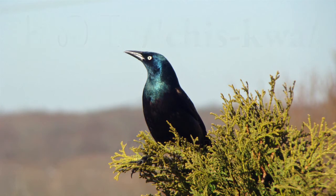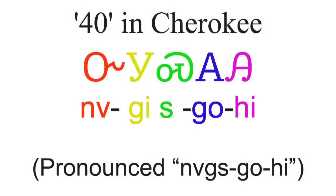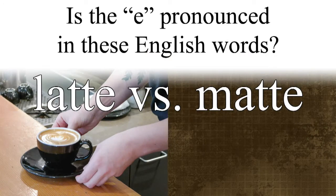The pronunciation rules change when Cherokee is spoken more rapidly. The word for 40 is spelled with syllabic characters, yet often pronounced with a consonant cluster. Pronounced directly from the syllables, this word would sound like nuggies-go-hi. In colloquial speech, the second vowel is dropped to sound more like nuggs-go-hi. However, readers would still know how to pronounce the word from the character sequence. It is similar to English speakers knowing when to pronounce or drop the final e, as in latte versus mat.